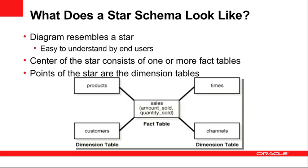As you can see in the diagram you really do get the impression that a star schema is a star. At the center of our example you see the sales table as the center of the star, and then at each of the points are the dimension tables that contain the more detailed information about each of the aspects of the model.